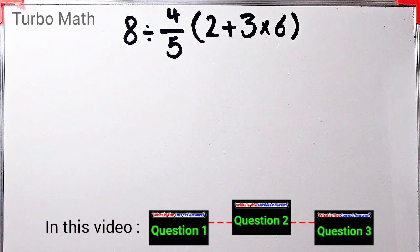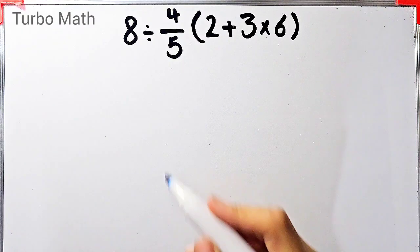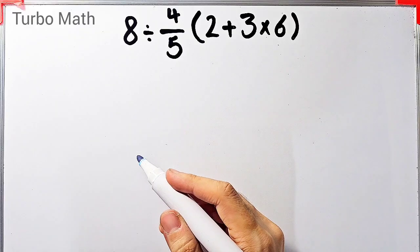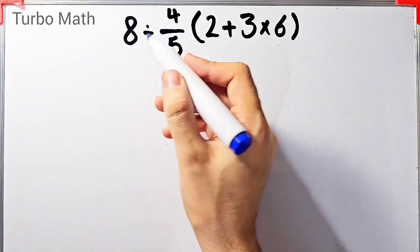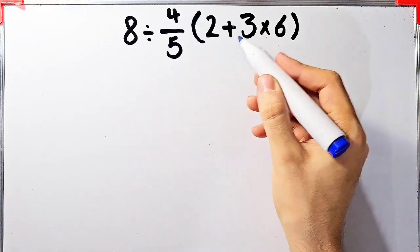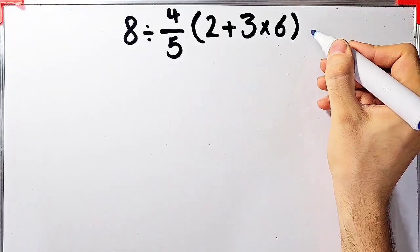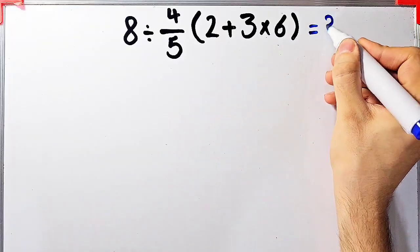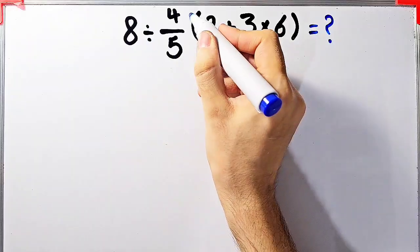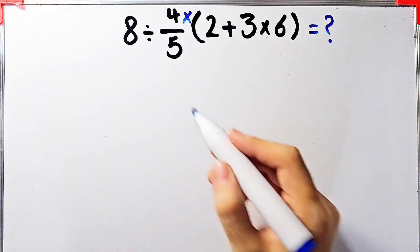Hi friends, welcome to Turbo Mass channel. In this video we are going to solve three questions about the PEMDAS rule. In the first question we have 8 divided by 4/5, then times (2 + 3 × 6). In this question we have division, multiplication, parentheses, and addition.